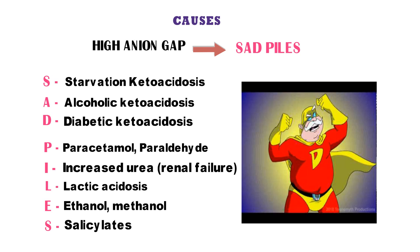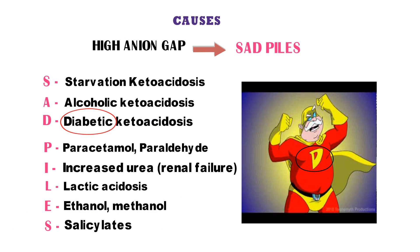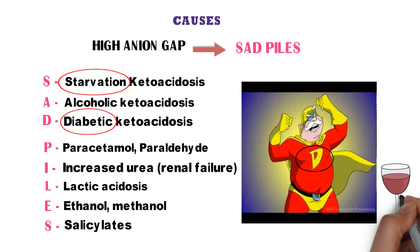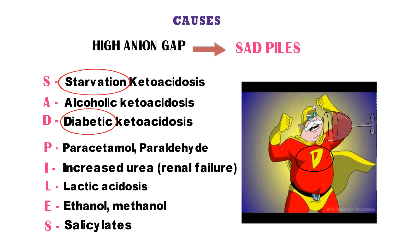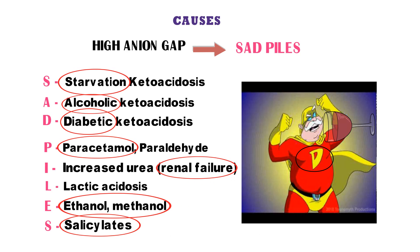As the causes are very important and sometimes it becomes difficult to memorize full forms of abbreviated mnemonics, you can also memorize these causes using this funny picture. Here is a diabetic superman — D is for diabetic ketoacidosis. He looks angry as if he is starving and has a headache after a lot of work: starvation ketoacidosis. For starvation he takes alcohol — ethanol or methanol. For the headache he takes paracetamol or salicylates, and being diabetic, renal failure can occur. Try to remember the mnemonic and this picture, and you will never forget any single cause.